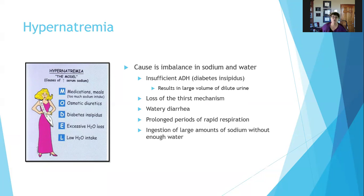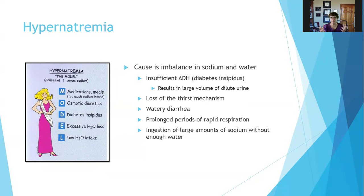The reason prolonged rapid respiration causes hypernatremia is that sodium combined with bicarbonate ion is exhaled as carbon dioxide in the lungs. So with a prolonged period of rapid respiration, you're getting rid of a lot of carbon dioxide, leaving you with excess sodium in your blood.